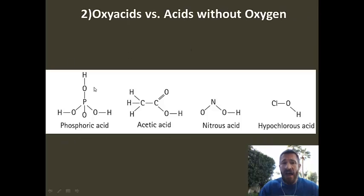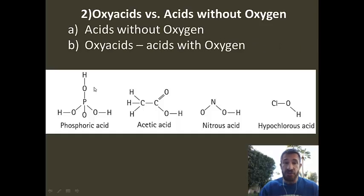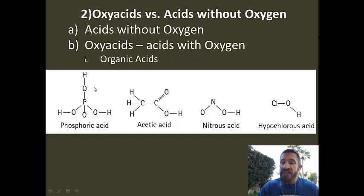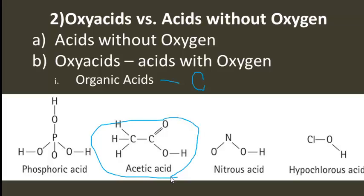We talked about acids that are oxyacids. On oxyacids, the acidic proton — or the hydrogen — is actually attached to an oxygen. Then there's acids without oxygen, and then there's oxyacids, which is a big category — those are acids with oxygen. Within that category, we're going to talk about two things today. One of those is organic acids. Organic acids are very important — they contain the element carbon. Of all these acids here, only one is an organic acid, and that would be acetic acid. It has the element carbon in two places, so that's an organic acid.